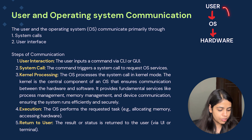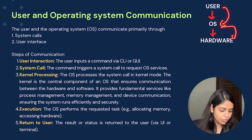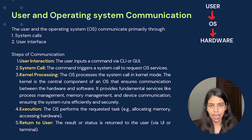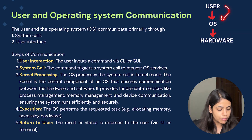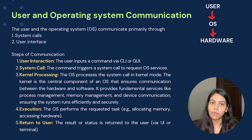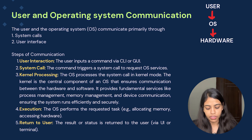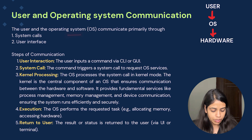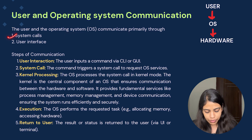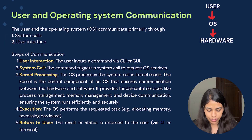So till date, we have learned that the user uses the operating system to communicate with the hardware. Now how does the communication between the user and the operating system happen? The user and the operating system communicate primarily through two ways: first, system calls, and second, user interface.